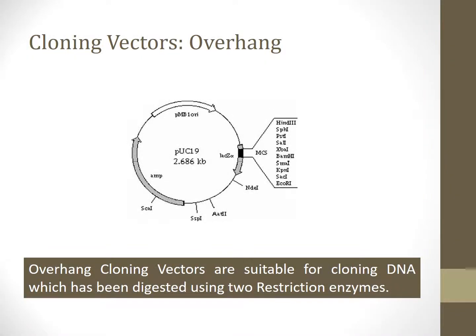Overhang vectors are developed by double digestion of plasmid DNA with two restriction enzymes. The DNA of interest can then be ligated onto this restriction site. These vectors are essential for the development of cloning and expression systems.